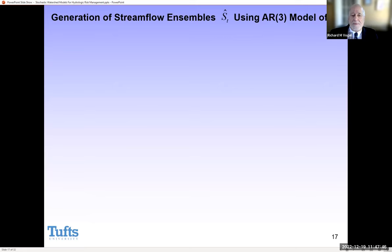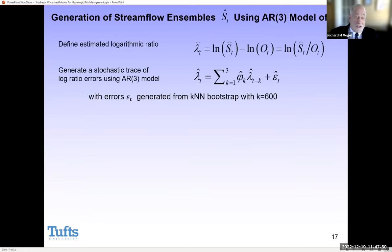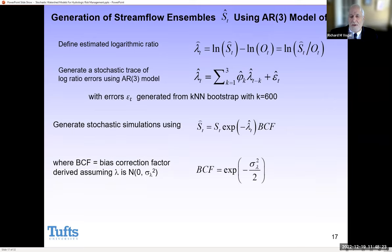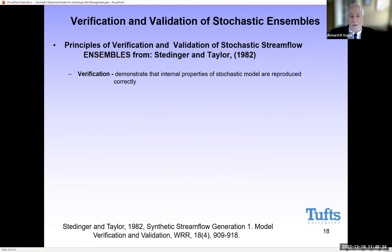Our simple approach — just one approach of many — is to work with the logarithms and fit those log errors to an AR(3) model. We then resample from those errors using a nearest-neighbor bootstrap, because the heteroscedasticity is still a slight issue. We then generate stochastic simulations with those generated lambdas. There is a need for a slight bias correction because when you retransform from log space back to real space there is transformation bias — a derived correction that depends on the normality of lambda.